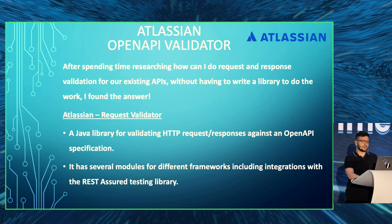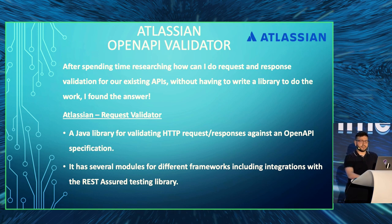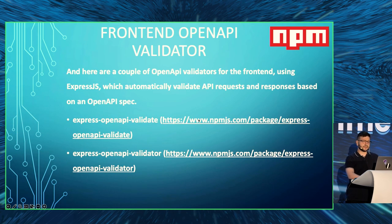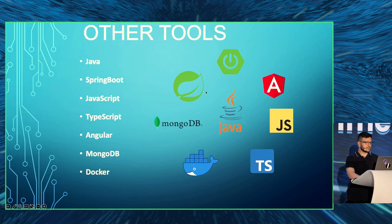Here is an extremely important component: after researching how to do request and response validation for existing APIs without writing a complicated parser library, I found that Atlassian has already done it for us. It's a Java library for validating HTTP requests and responses against an OpenAPI spec document. It has several modules with different integrations for different frameworks, and it has a REST Assured testing library which we'll use in the demo. There are also OpenAPI validators for the front-end using Express.js that automatically validate API requests and responses against a spec document.